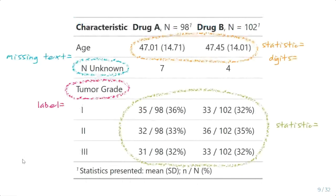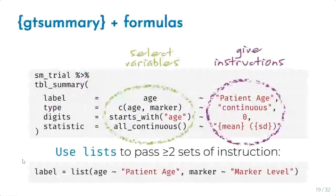Here's a quick schematic showing what parts of the table each argument modifies. In orange, the statistic argument changed age from median/IQR to mean and standard deviation. The digits argument changed from the default zero decimal places to two decimal places. In green, the statistic argument added the denominator for grade. The label argument changes variable labels, and the missing_text argument changes the text shown for missing variables throughout the gtsummary package.